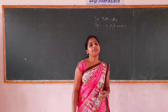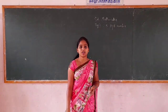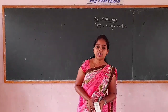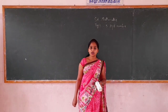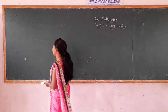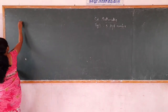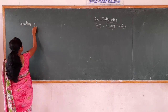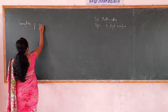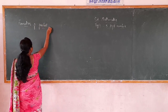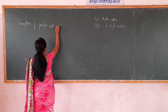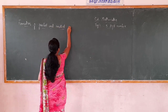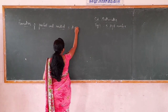Hello everyone. In our previous class we learnt about 5-digit numbers in the place value chart and expanded form of the 5-digit number. In this class, let us learn more about 5-digit numbers — the formation of the greatest and smallest 5-digit number.